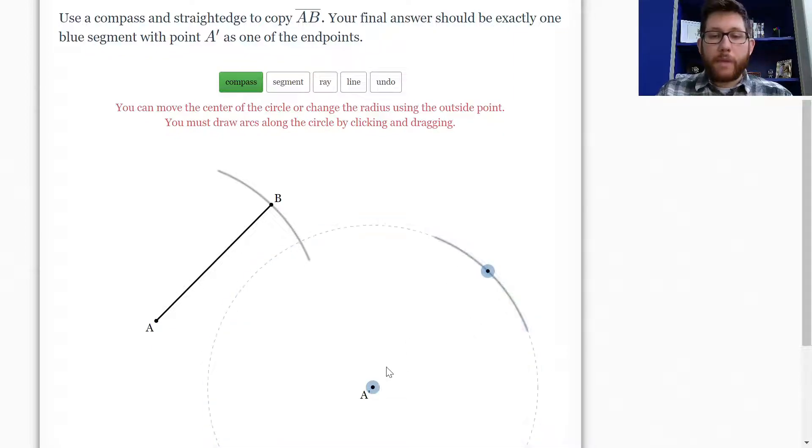So remember that the radius of a circle is the same distance no matter where it's from on the circle, just as long as it's going back to the center. So in this case, I could draw this arc here, and that's part of a circle.